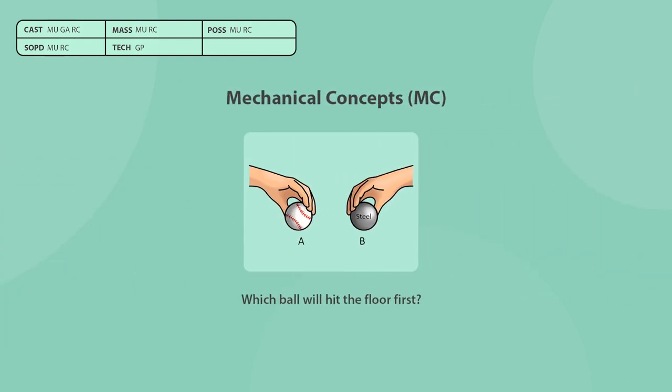The mechanical concepts category tests your ability to understand basic physics. It usually includes questions regarding pulleys, gears, electricity, thermodynamics, and more. This part is one of the most common EEI test sections, and it appears in the following tests.